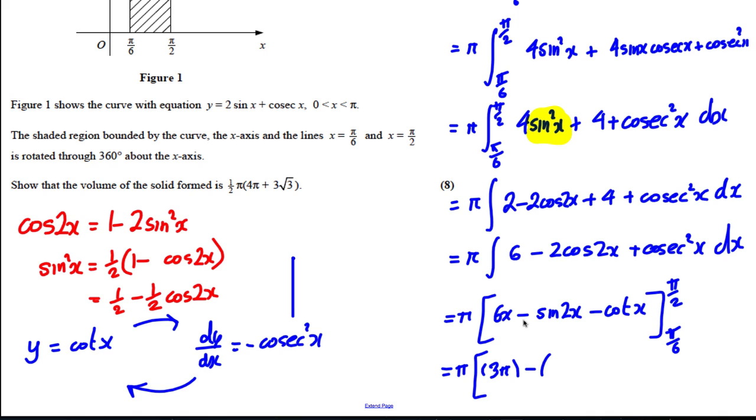Let's put in pi by 6 now. 6 times pi by 6 is simply pi, subtract sine of 2 pi by 6, which is pi by 3. The sine of pi by 3 is root 3 over 2, so you're going to get negative root 3 over 2.